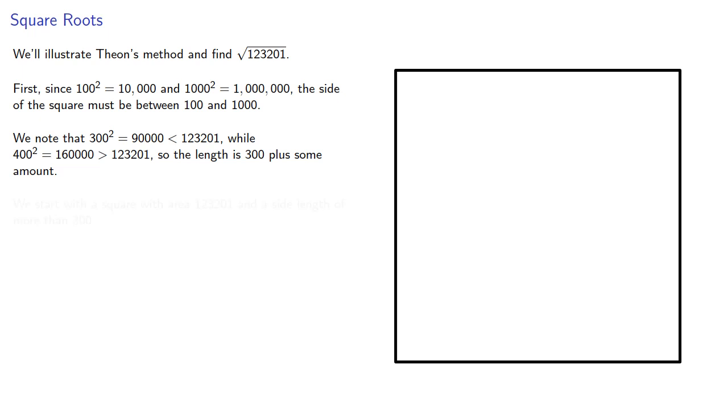We start with a square with area 123,201 and side length more than 300. We can think of our square as containing a square of side 300. We'll draw that in. Remember, if it's not written down, it didn't happen. Let's indicate this square has a side of 300.